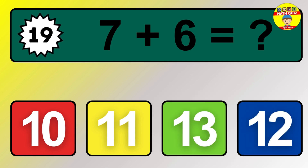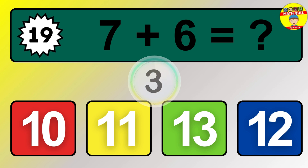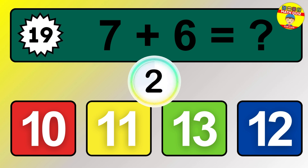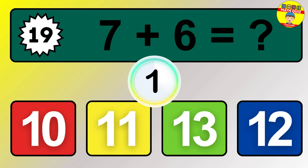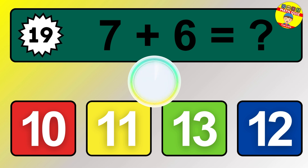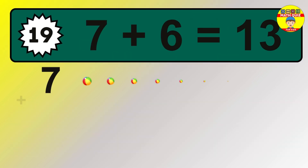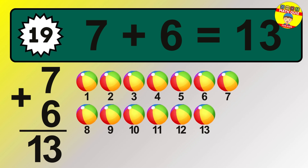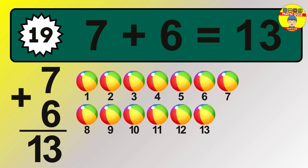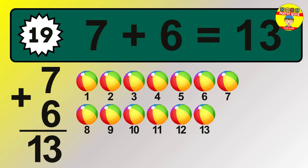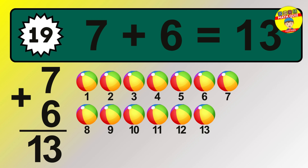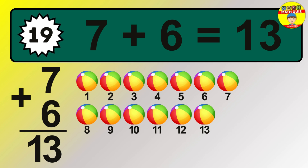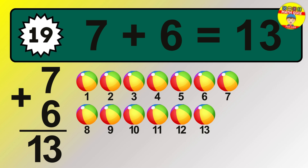Question 19. 7 plus 6 equals what? 1, 2, 3, 4, 5, 6, 7, 8, 9, 10, 11, 12, 13.